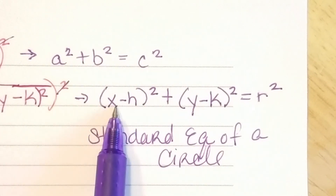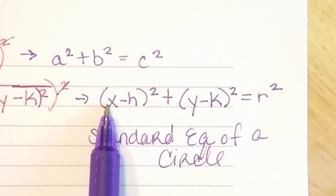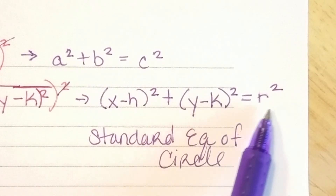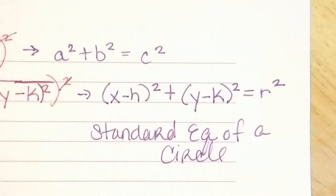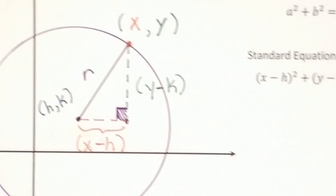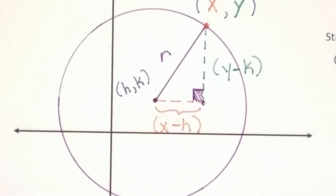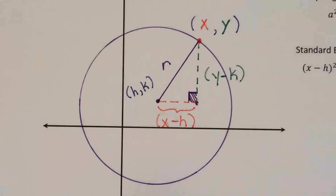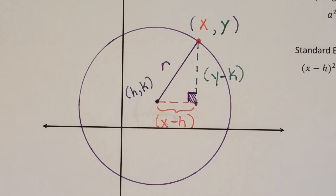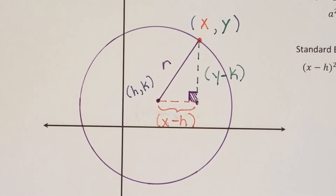So even though the horizontal and vertical quantities will change, r will remain the same, because that's a property of a circle — the distance is constant.